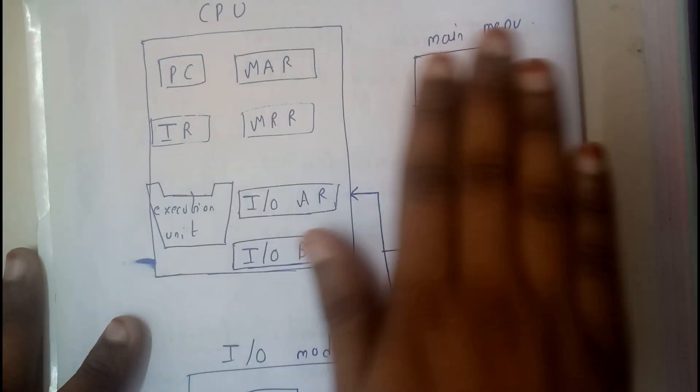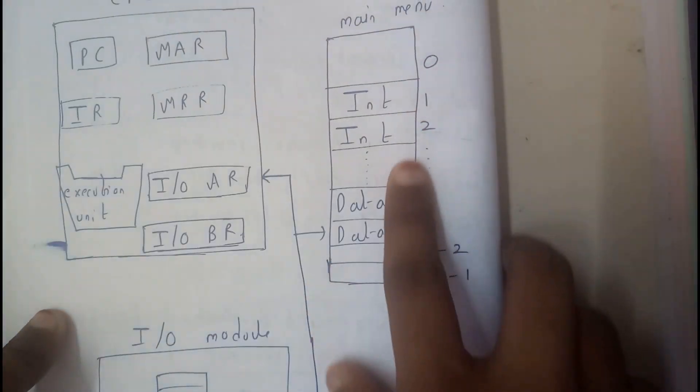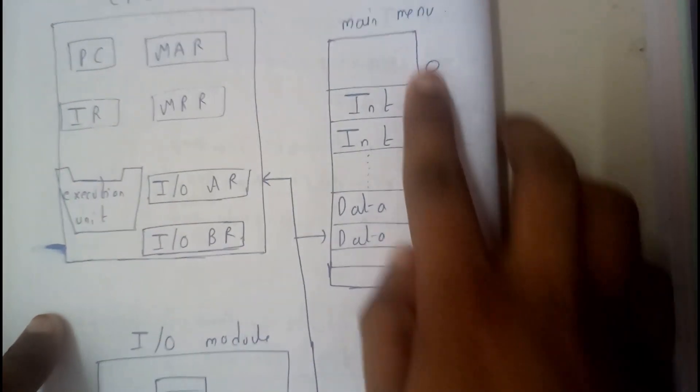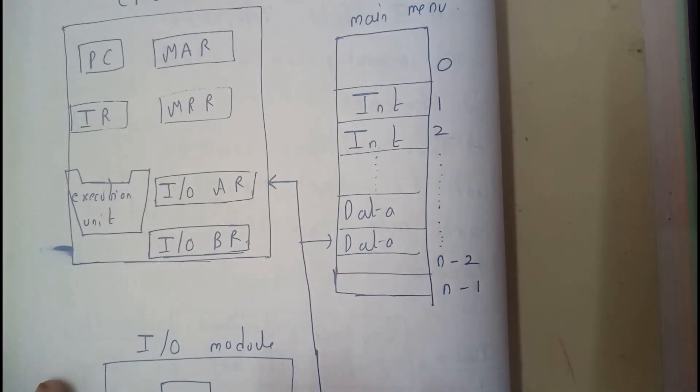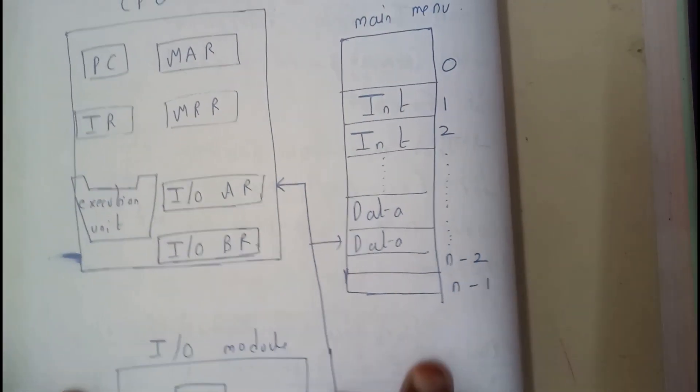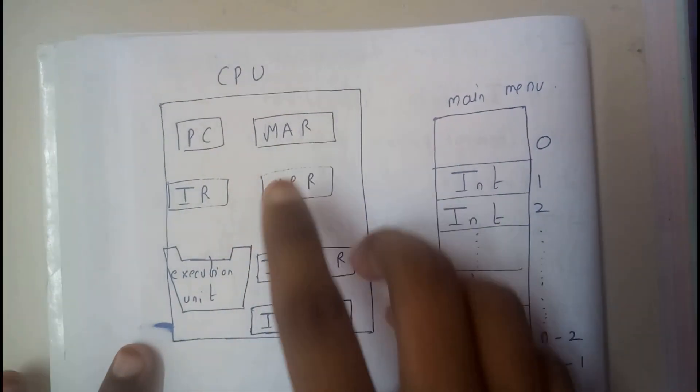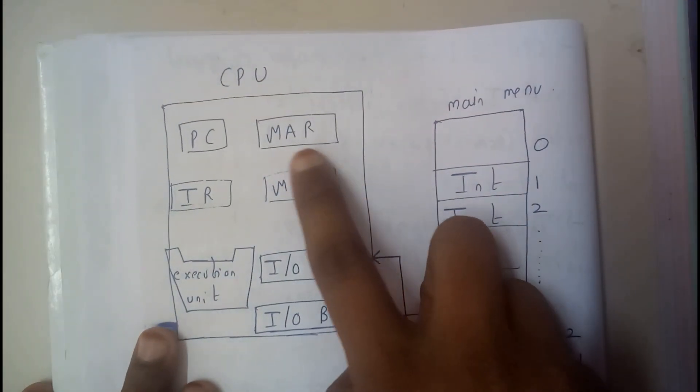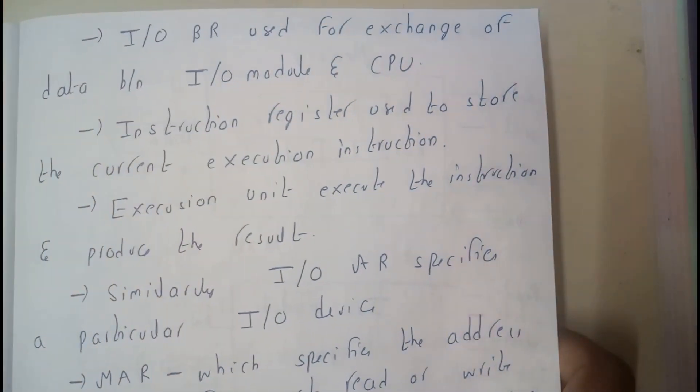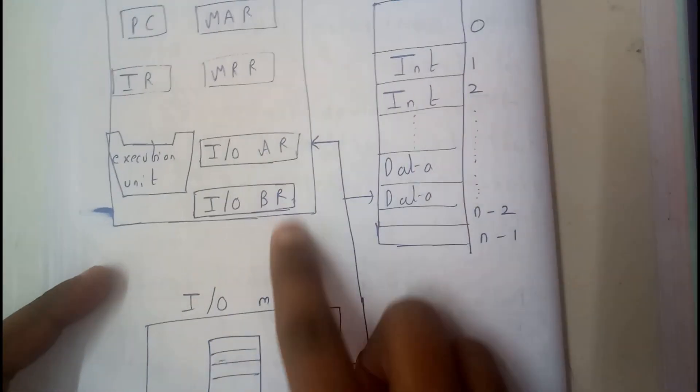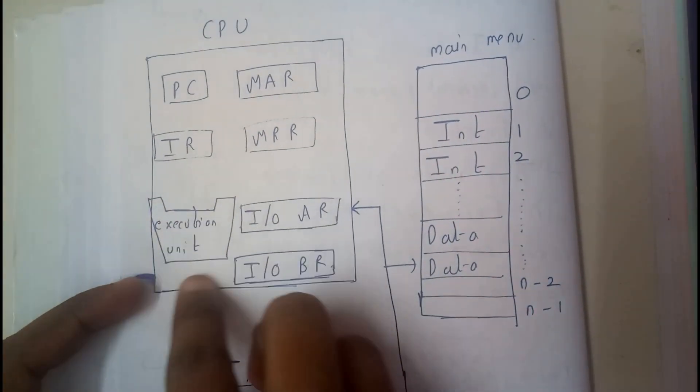This is the diagram guys. You can just remember it. I/O module consists of many slots to connect many devices. Memory unit has many addresses which can store any kind of data, irrelevant of its type. CPU contains PC that is program counter, MAR that is memory address register, IR that is instruction register, and it also has I/O AR input-output address register, input-output buffer register. It also has an execution unit. These are all the parts of CPU.